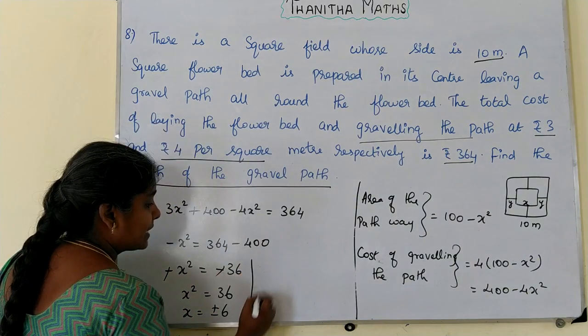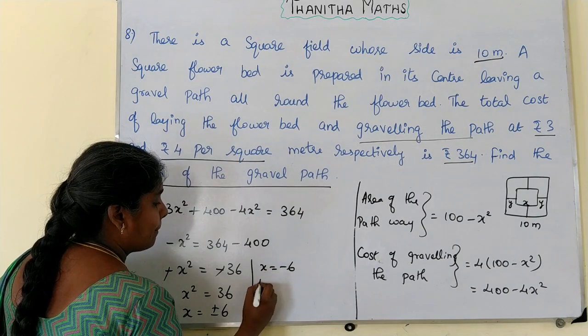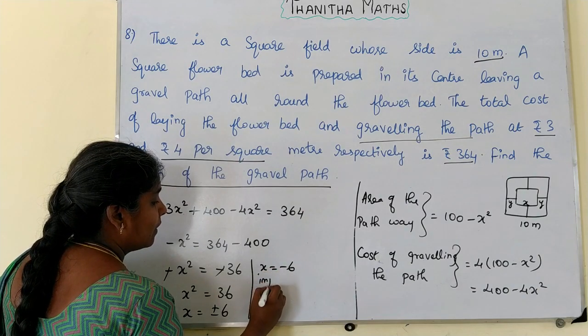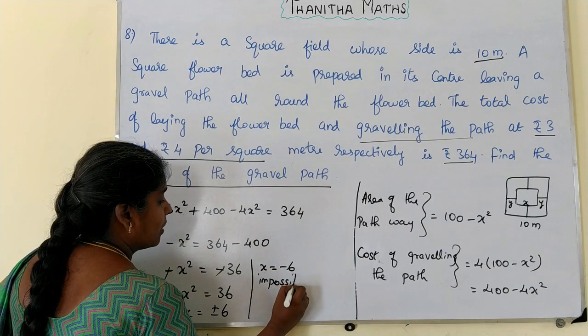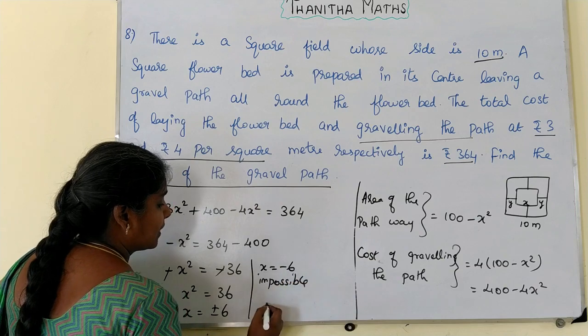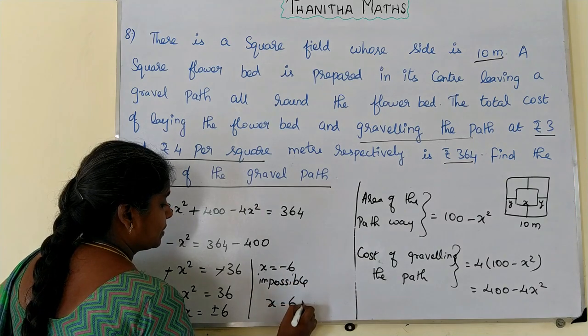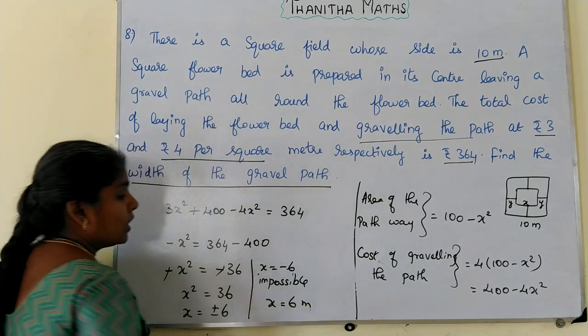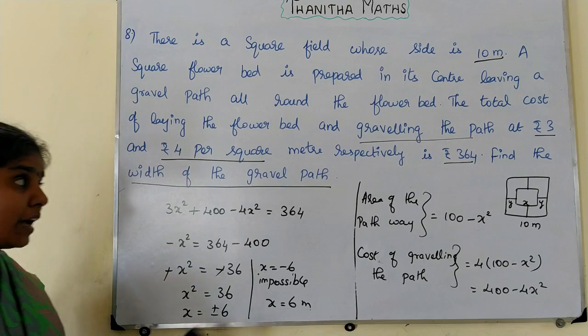Since x equals minus 6 is impossible, we reject the negative value. Therefore, the length of the flower bed is x equals 6 meters.